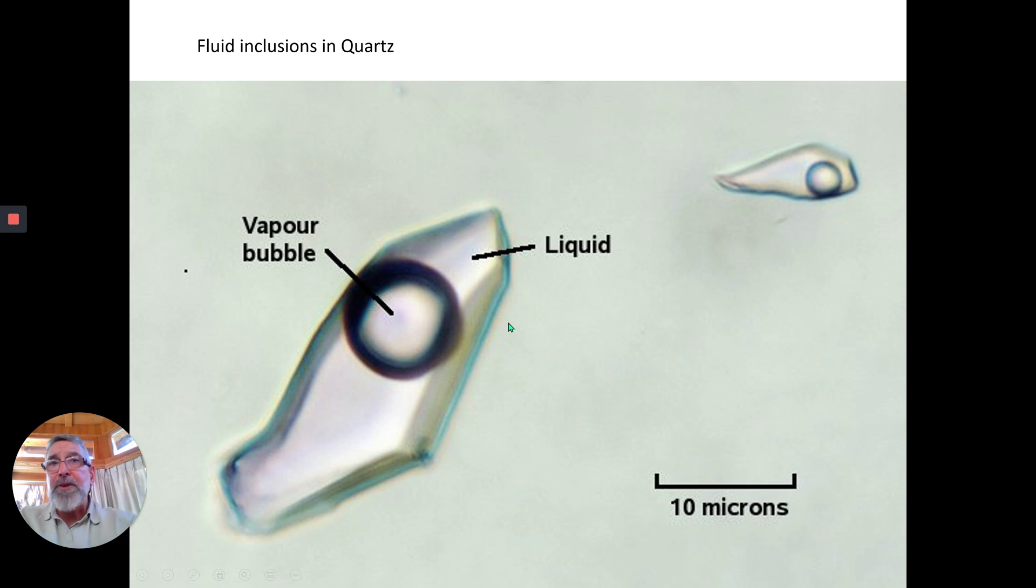Why do we look at these things and what's important with them? We can determine, and it's very cleverly done, the trapping temperature. So we know if the fluids were boiling or not, and the salinity.